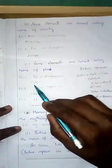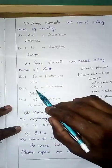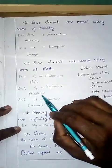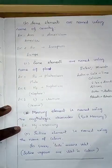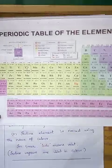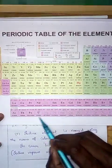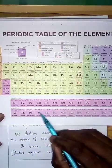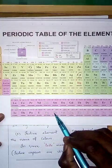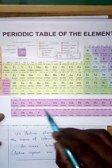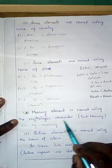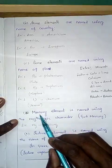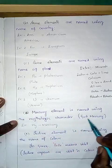Some elements are named using the names of planets. Examples: plutonium Pu after the planet Pluto, neptunium Np after Neptune, and uranium U after Uranus. In the periodic table, uranium is atomic number 92, neptunium 93, and plutonium 94 — all three named based on planets.